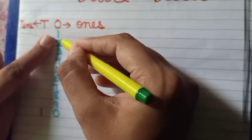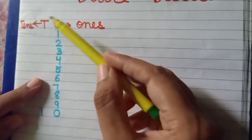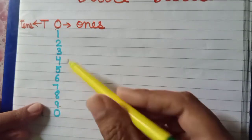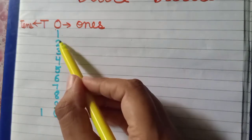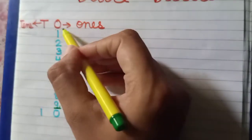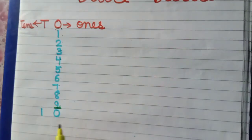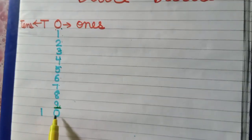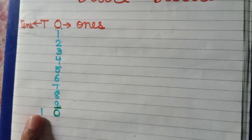We always write one-digit numbers starting from ones place. Nine tak one digit hai — 1, 2, 3, 4, 5, 6, 7, 8, 9. Toh humne kahan se start kiya? Ones digit se. Ab jab two-digit number aa gaya — ten is a two-digit number — toh zero ones ke place par likhenge aur one tens ke place par.